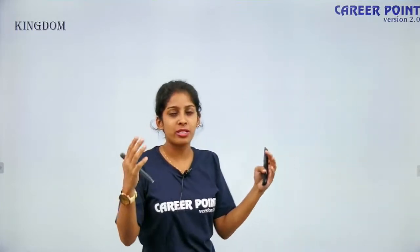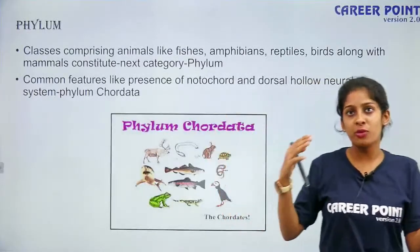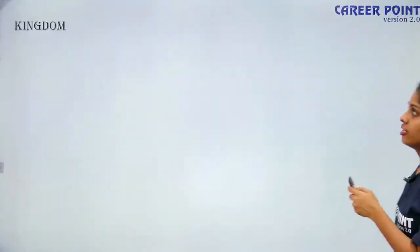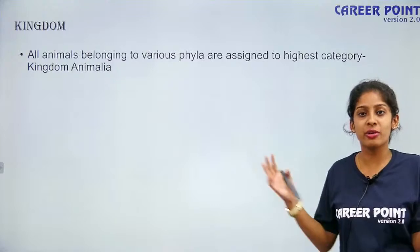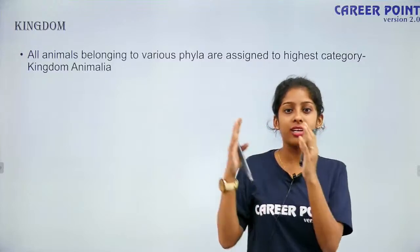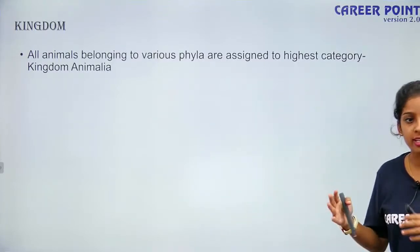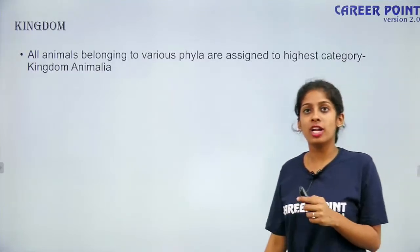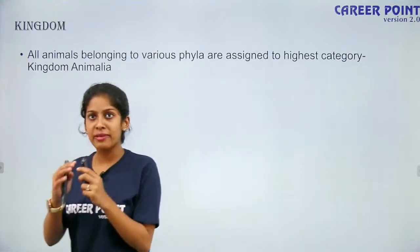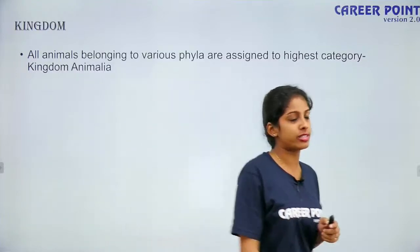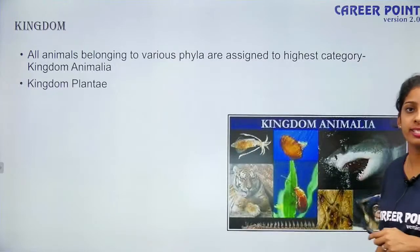Finally the broadest term: kingdom. A group of species, genera, families, classes, orders, and phyla are assigned to the highest taxa — kingdom. We call it kingdom Animalia. Under kingdom Animalia you have phylum Chordata, then class Mammalia, then order, then family, and so on. This is the highest taxonomic classification present.